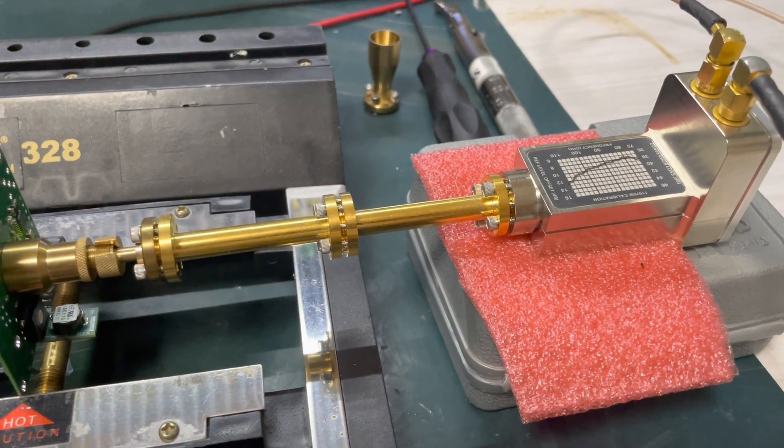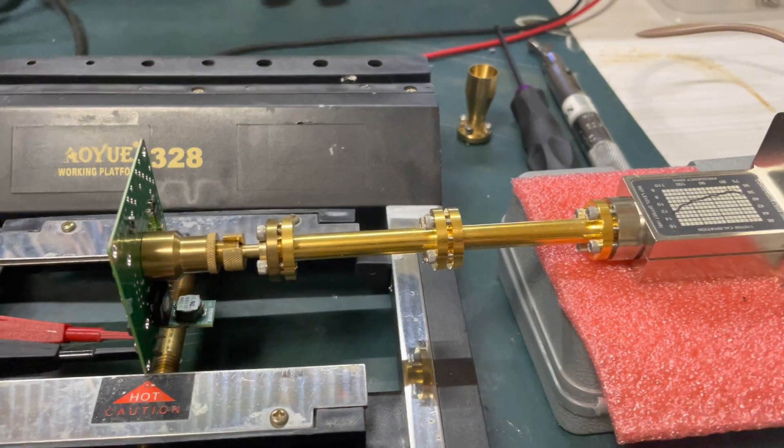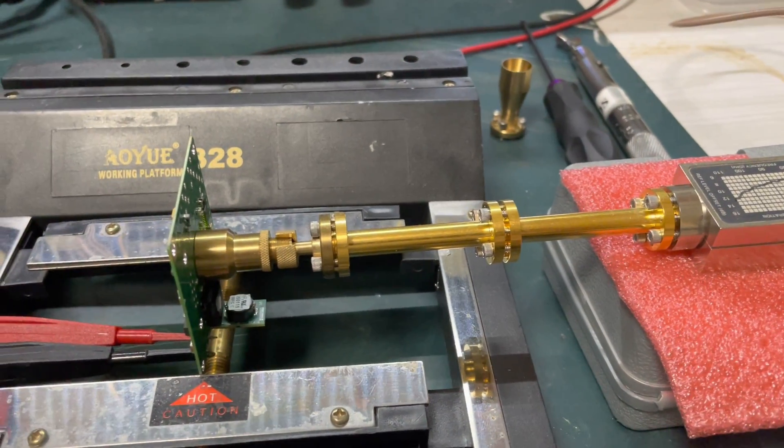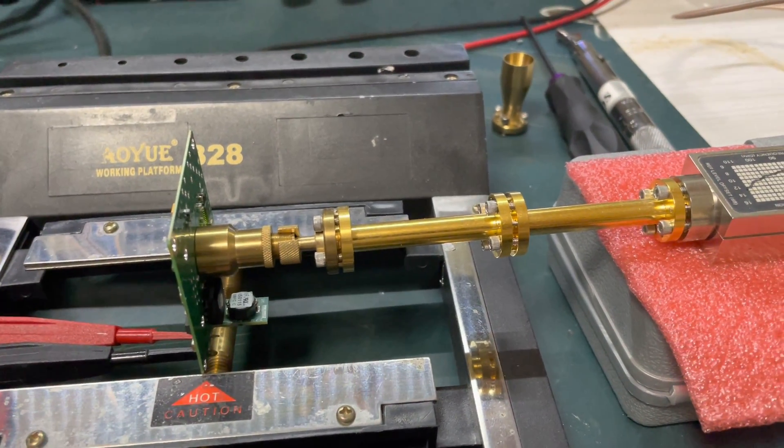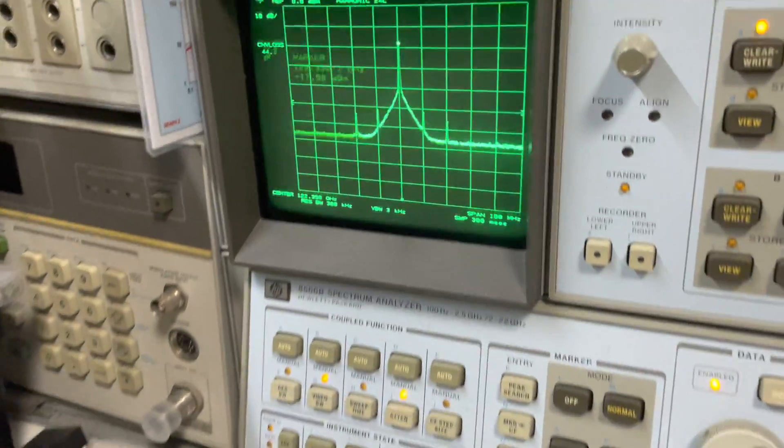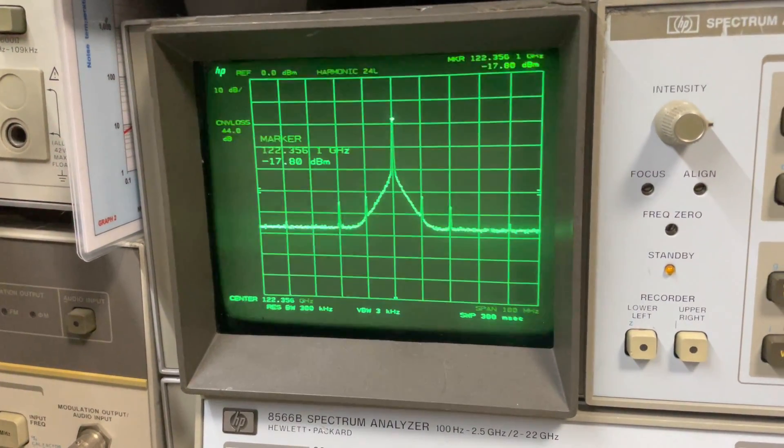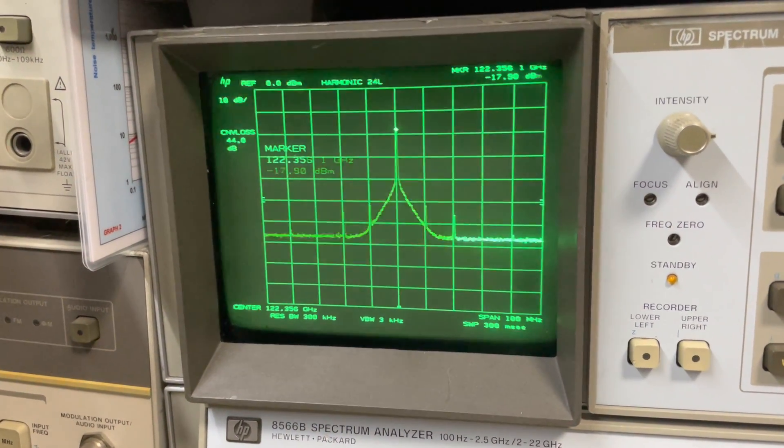We've got a couple of 2 inch WR10 waveguides attached to a coupler that was made by Neil G4DBN that was peaked for maximum output. We can see the output on the spectrum analyzer and we're getting around minus 18 dBm.